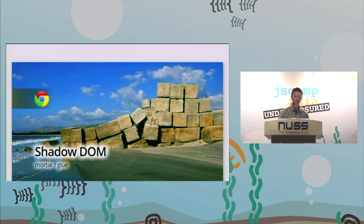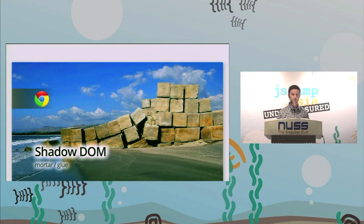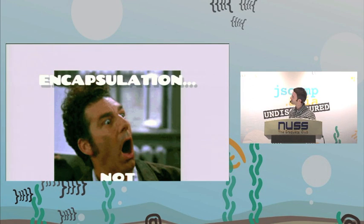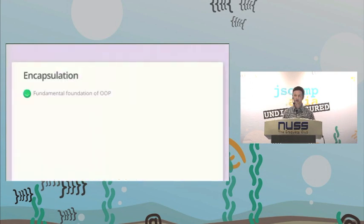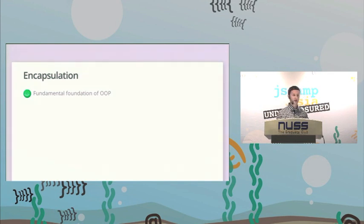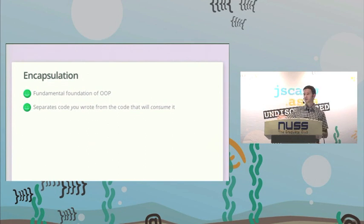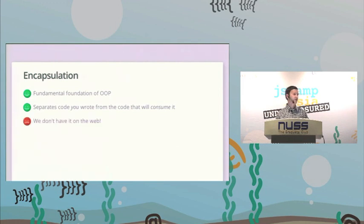Now I want to talk about Shadow DOM. It's really the building block of encapsulation and the boundaries we're setting up with web components. Encapsulation is a fundamental concept of object-oriented programming — you set up guarantees, interfaces for APIs, and a guarantee of how something will be used. You separate the code you write as the developer from how the consumer uses it. But we don't have this on the web, and that kind of sucks. Why don't we have these fundamental things of software development for web development?